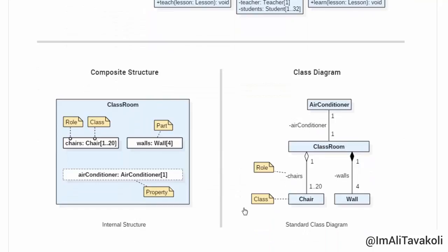Let's take a look at our next example. Here is the composite structure of our classroom class — our goal is to show its internal structure. It has two important parts: this one and this one. By parts we mean attributes, so the classroom class has two important attributes: walls and chairs. In the composite structure, we call the name of the attribute the role and its type the class. We also mention the multiplicity: a classroom can have from 1 to 20 chairs and must have 4 walls. Our classroom also has a property named air conditioner, whose type is air conditioner, and it has only one of it.